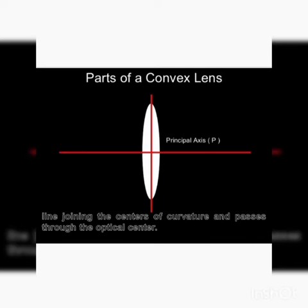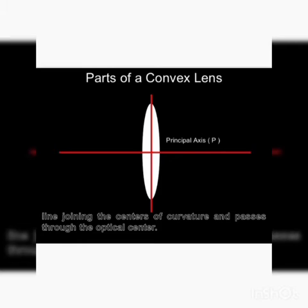Principal axis की बात करें तो यह वो line है जो join कर रही है center of curvature को optical center में। Optical center यह center है जो lens का center होता है। इस optical center में जो दो lines एक दूसरे को join करती हैं, join करने के बाद जो line center of curvature की तरफ pass हो रही है उसे हम principal axis कहते हैं — यानि कि यह जो red color की line है, यह principal axis है जो center of curvature पे join हो रही है।